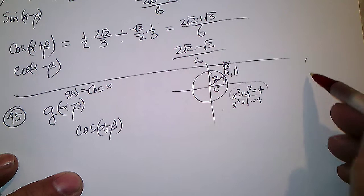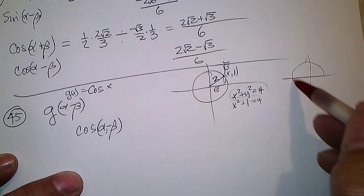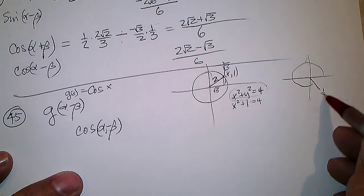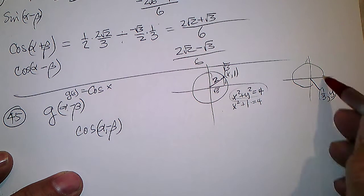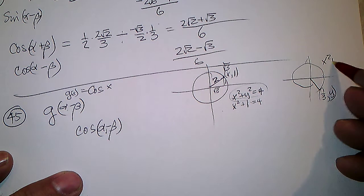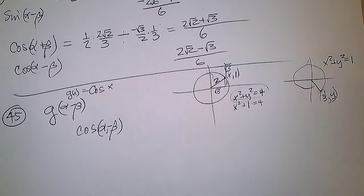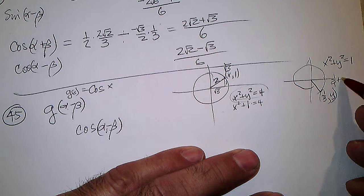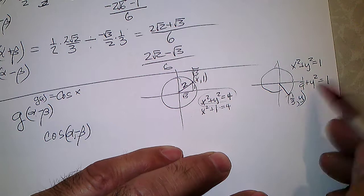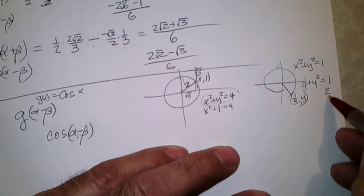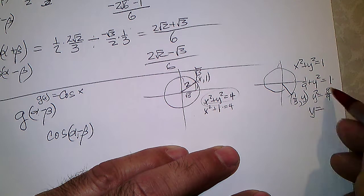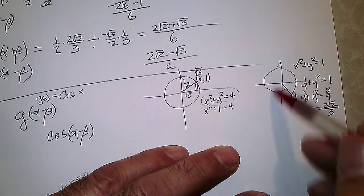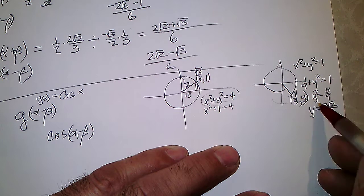The second figure has a circle with an angle and a point at (1/3, y). The equation is x squared plus y squared equals 1, a unit circle. So 1/9 plus y squared equals 1, giving y squared equals 8/9. Thus y is 2√2 over 3. Since the point is in the lower part, we take the negative square root.